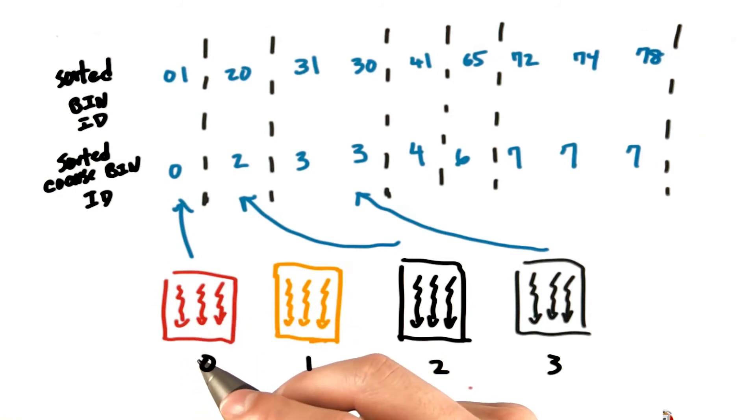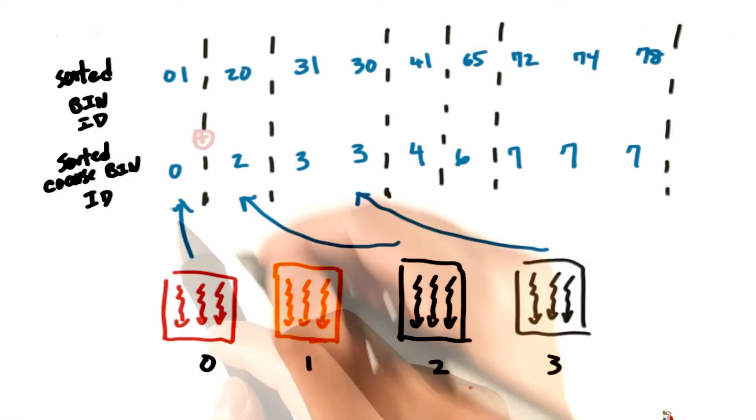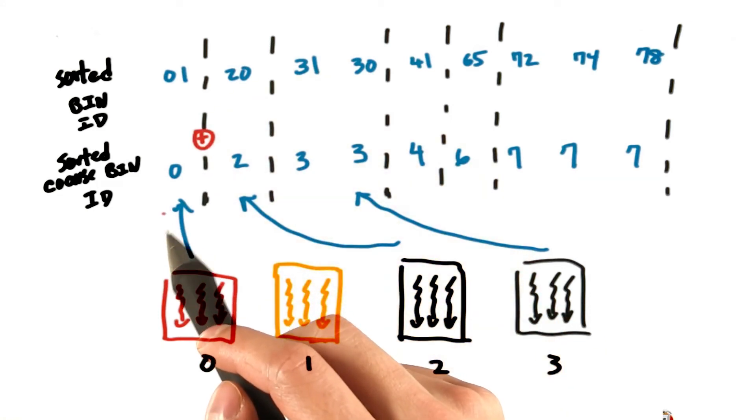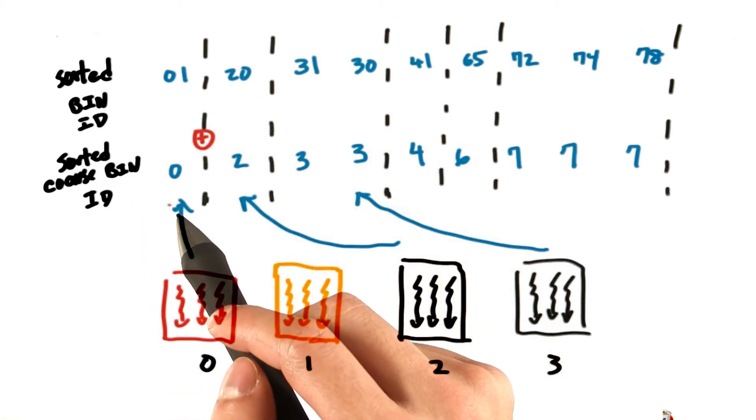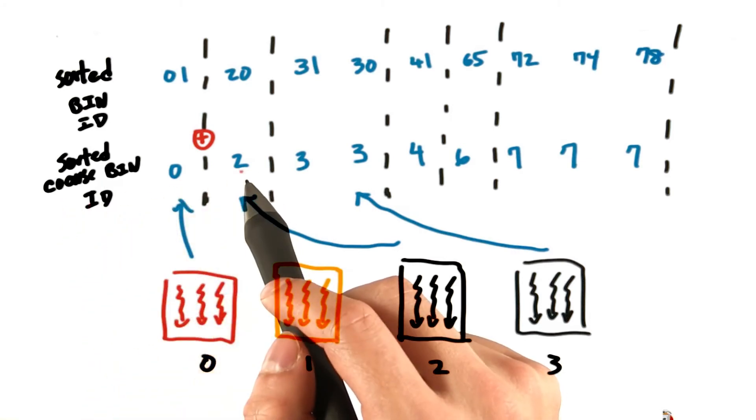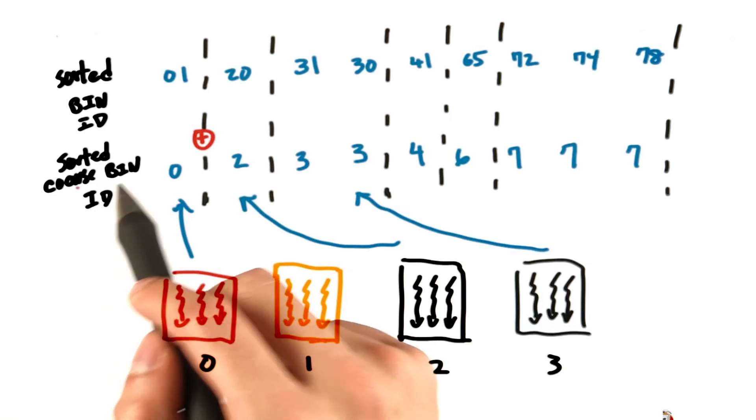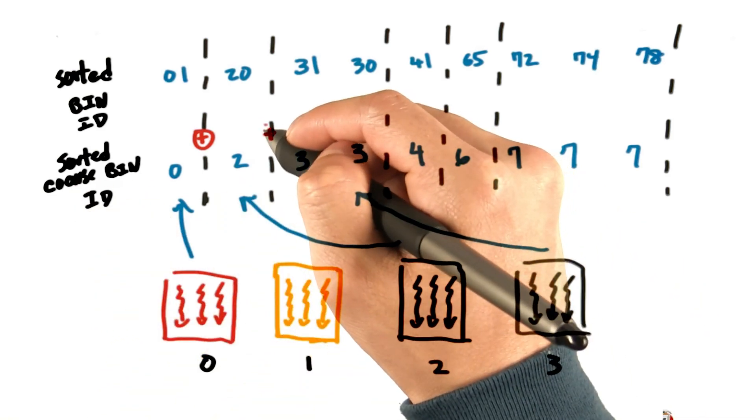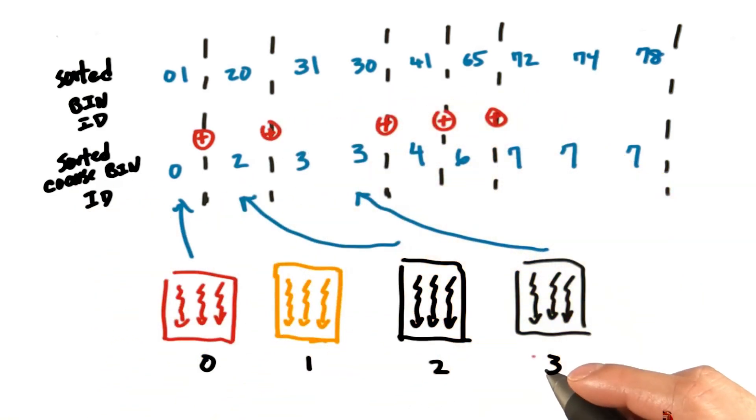To get our final histogram, we can simply concatenate all those histograms together end to end. So we would combine the histogram that we calculated for coarse bin ID of 1 with the histogram that we computed for coarse bin ID of 2 and so on and so forth. That's it. Good luck.